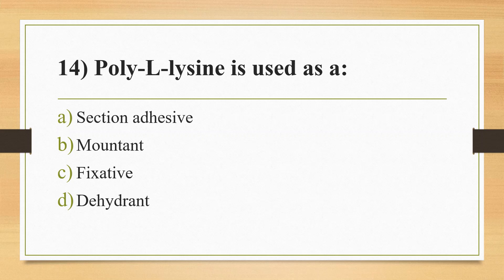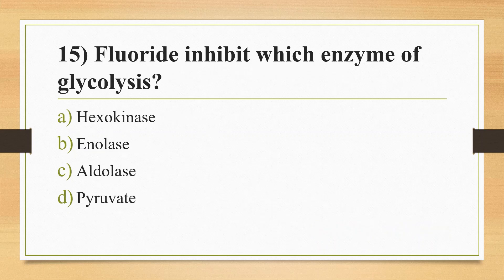Question 14: Poly-L-lysine is used as — Option A: Section Adhesive. Option B: Mountant. Option C: Fixative. Option D: Dehydrant. Answer is Option A, Section Adhesive. Question 15: Fluoride inhibits which enzyme of glycolysis? Option A: Hexokinase. Option B: Enolase. Option C: Aldolase. Option D: Pyruvate. Answer is Option B, Enolase. Sodium fluoride is used for glucose estimation by inhibiting the enzyme enolase.